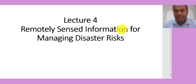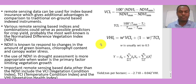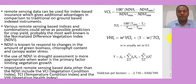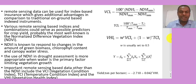Welcome to lecture 4, which is about remotely sensed information for managing disaster risks. The main question when learning about remote sensing and GIS for disaster risk management is: how can we use remote sensing data for disaster risk management? One of the most common applications is to develop vegetation indices and use them for index-based insurance and for damage assessment after a disaster.